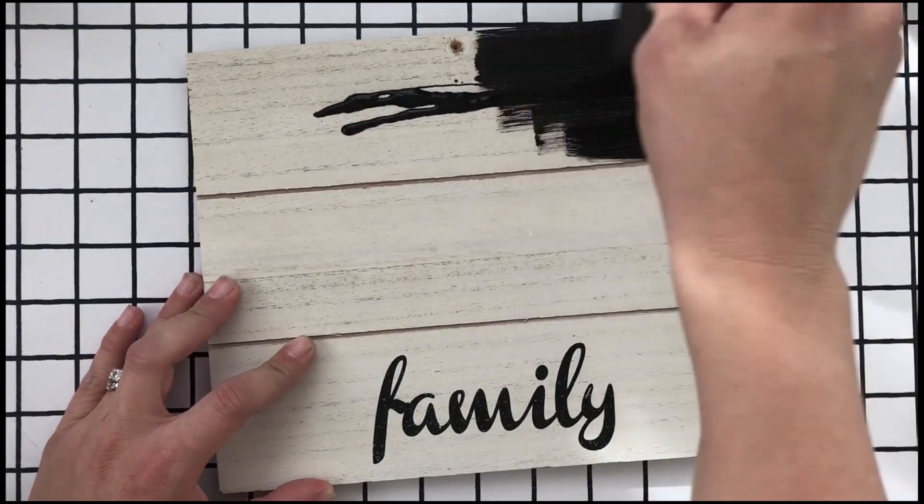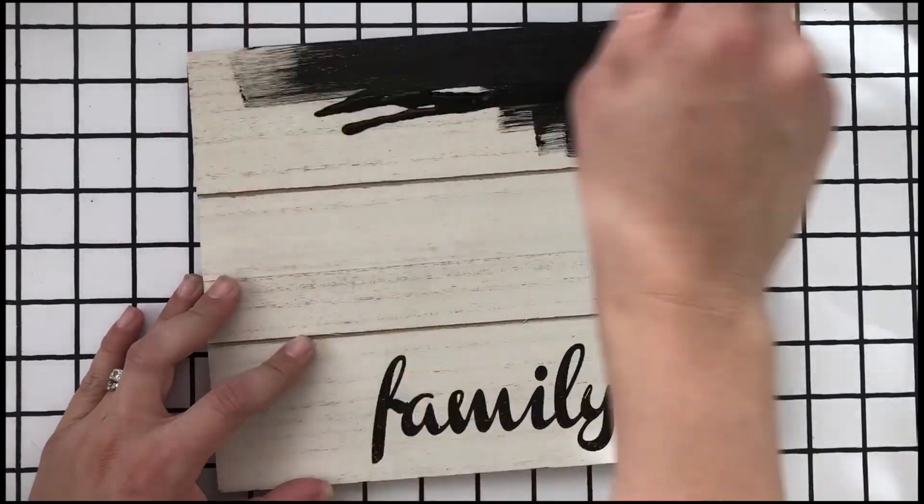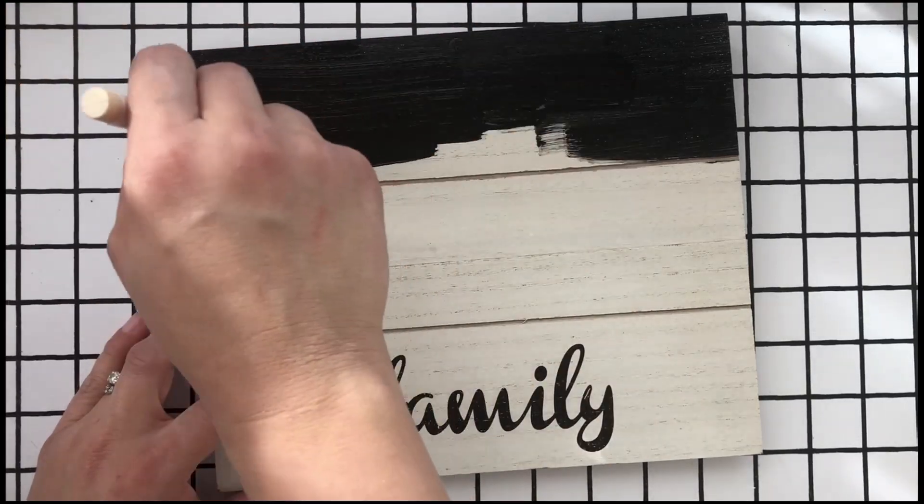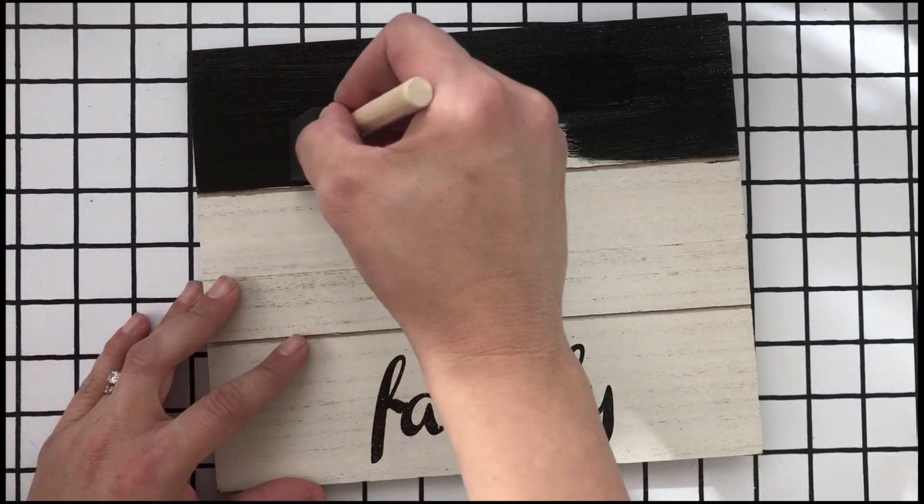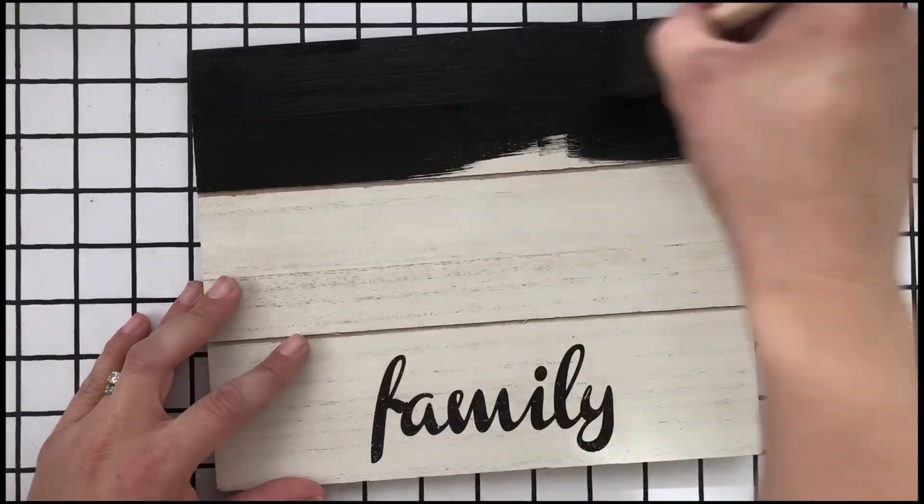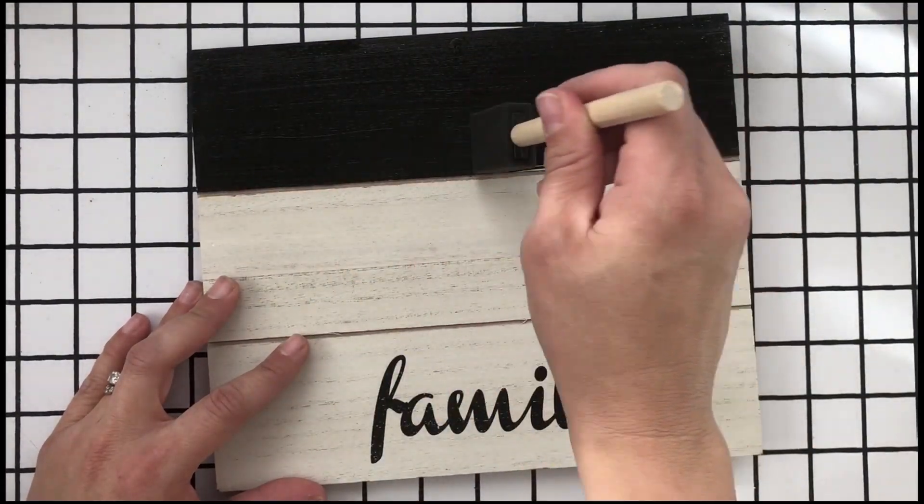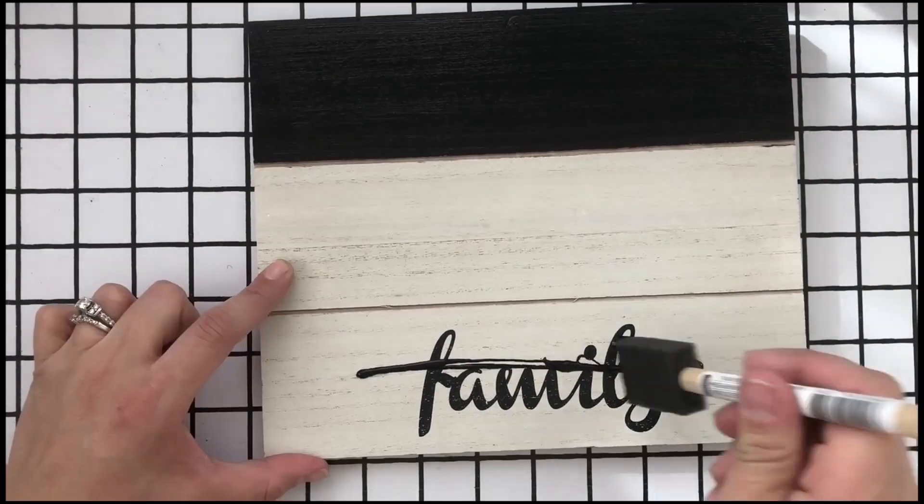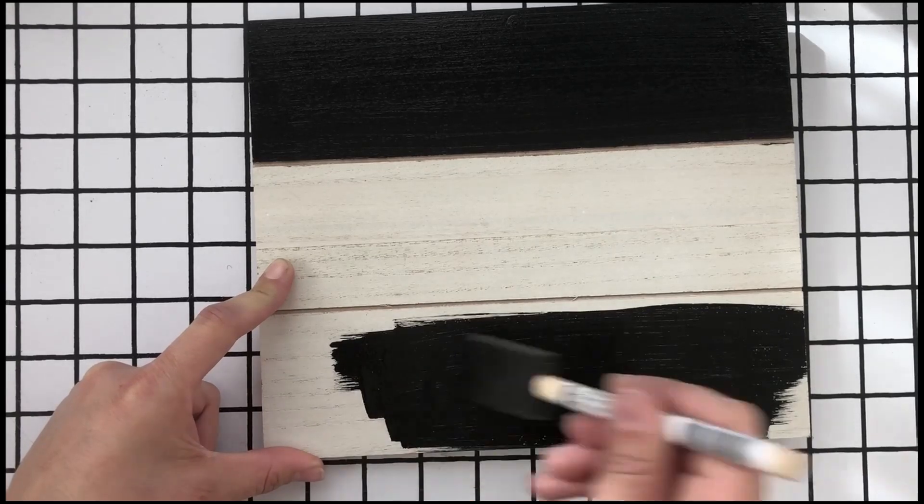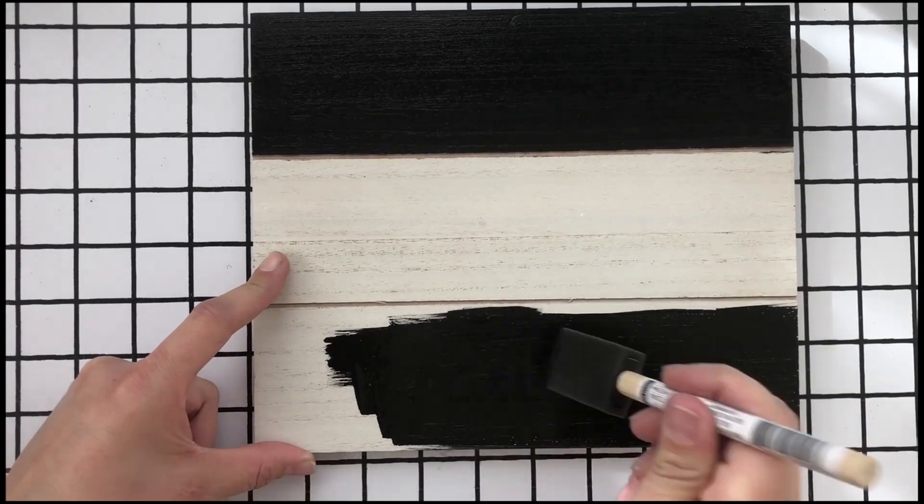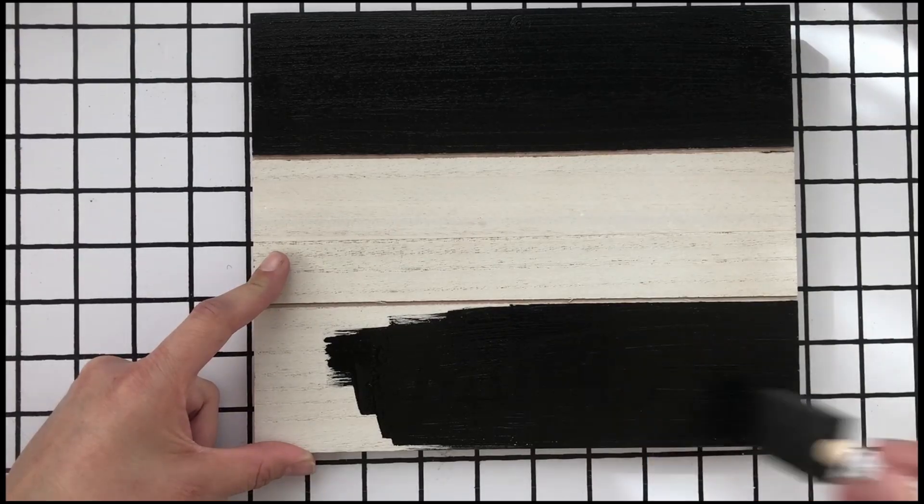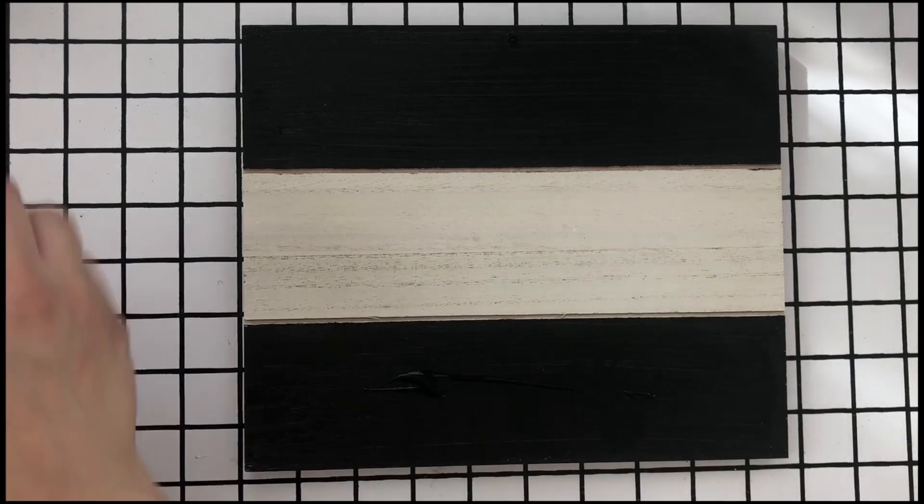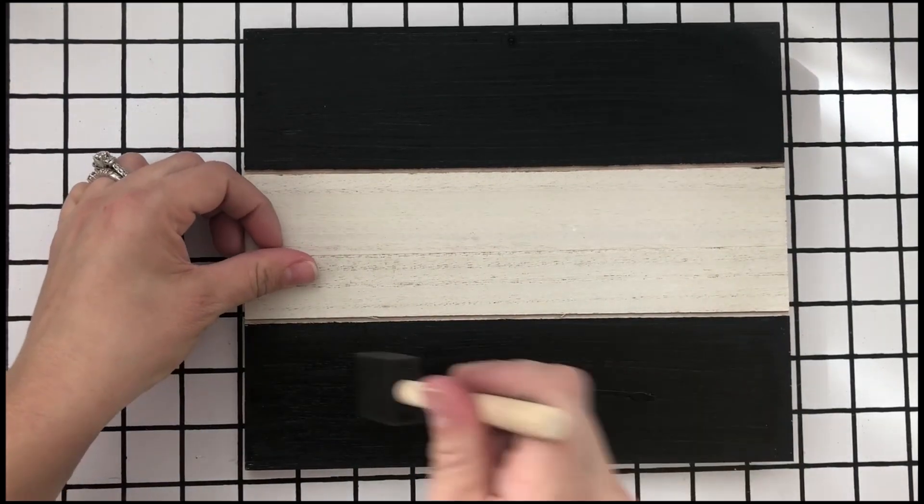I'm careful not to get any paint into the crack because I want this space between my colors. So this lower panel actually ended up needing two coats of black paint just to cover up that wording.